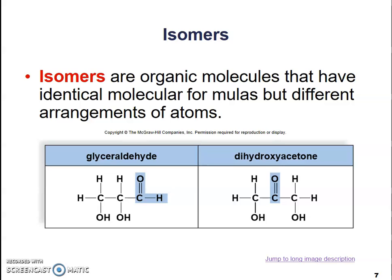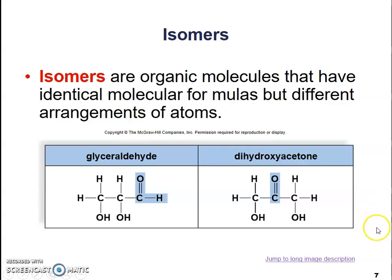Isomers are organic molecules that have identical molecular formulas but a different arrangement of atoms. If I count the carbons in this glyceraldehyde, I have one, two, three. If I look at this dihydroxyacetone, I have three as well — the exact same number of hydrogens and the exact same number of oxygens. The only difference is the way they have been put together. It's like if I gave everybody in class a set of Legos with exactly the same pieces — odds are we are all going to build something that looks a little bit different.